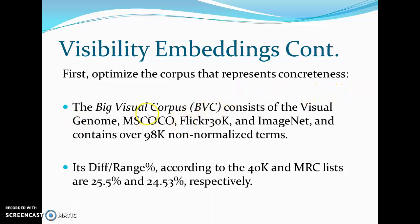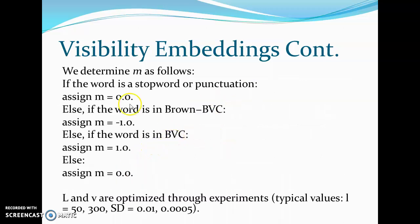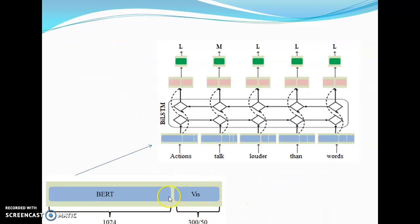We find M by using a visual corpus as a reference — specifically the predefined BVC (big visual corpus) that maximizes the metric we use to measure the concreteness level of a corpus, meaning the BVC is highly concrete. For each word: if the word is a stop word it gets 0; if the word is in Brown minus BVC — a smaller, highly abstract corpus — it gets minus 1; if it's in the BVC it gets 1; otherwise 0. We then take these visibility embeddings and concatenate them to embeddings from a pre-trained BERT.